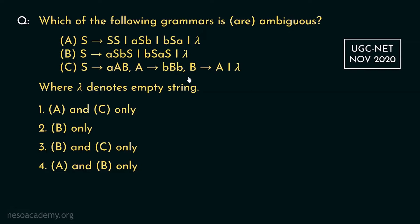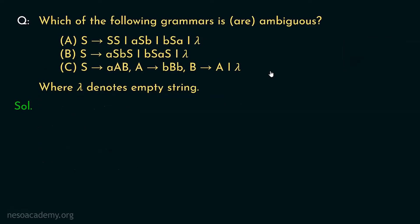And B can be written as either capital-A or lambda, where lambda denotes the empty string — basically instead of epsilon, empty string is denoted by lambda here. We need to determine which of these grammars are ambiguous.